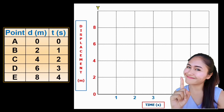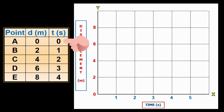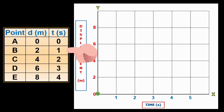Now that we have already emphasized the basic things, we will start to plot the points. At point A, time is 0, so obviously the distance traveled is 0, so the point will be plotted at the origin. For point B, at time 1 second, the object covers 2 meters distance from the origin, so we locate 1 second on the x-axis and 2 meters on the y-axis. Here is the point where the two components intersect.